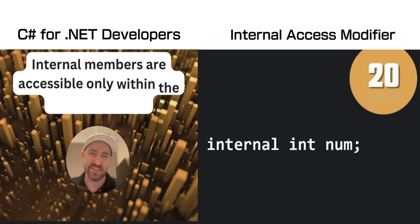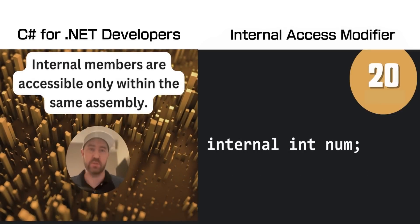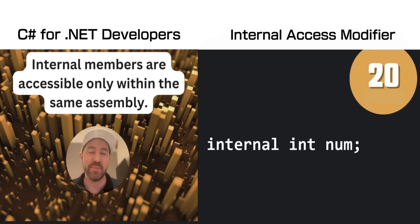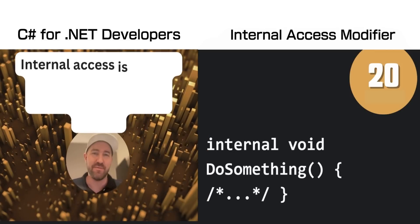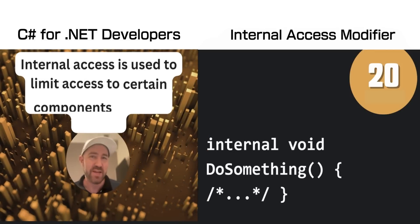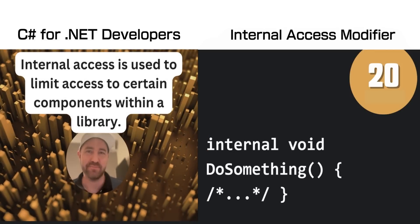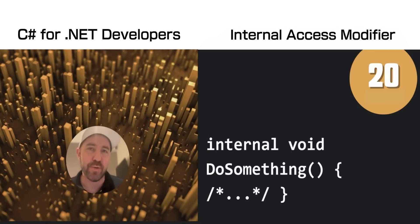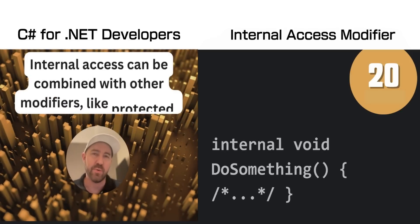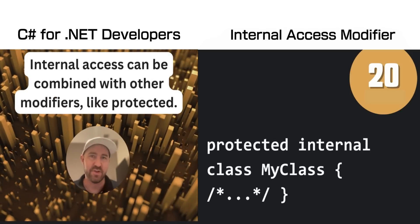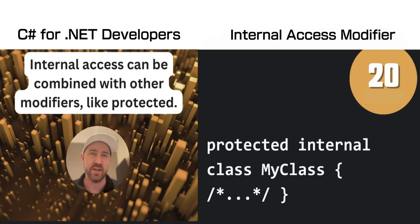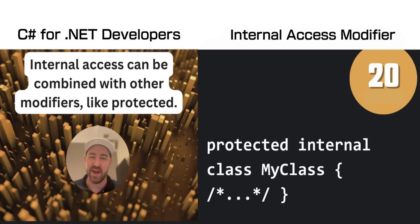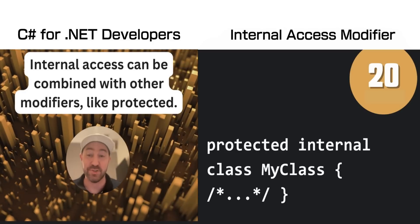An interesting access modifier in C# is the internal access modifier, which means this member can only be accessed from within the same assembly as itself. It's commonly used in library-based development, where we want access for the entire DLL to this member. You can also mix it with other access modifiers, such as protected.